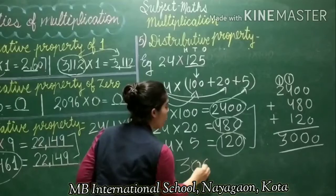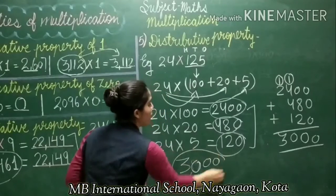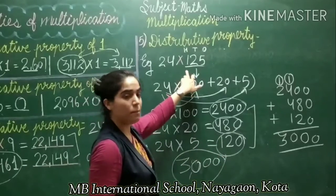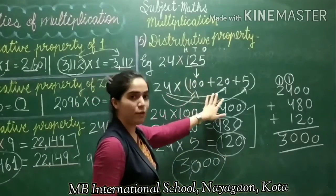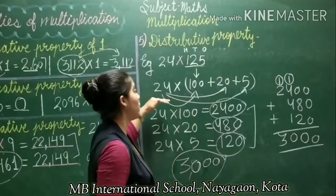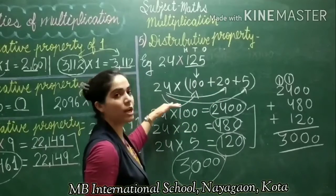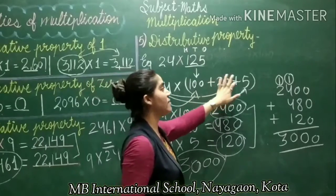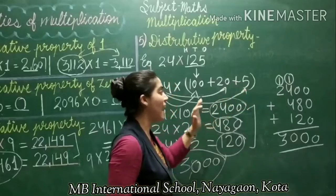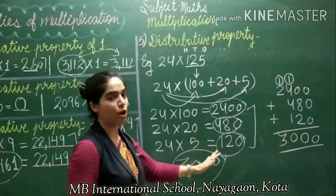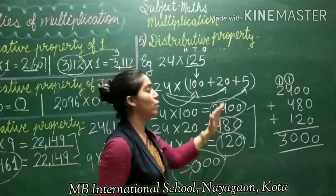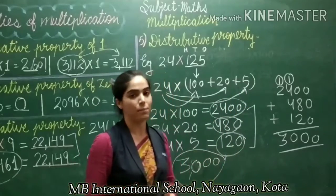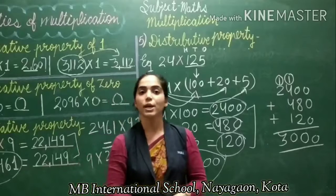According to distributive property, first we have to write the bigger number in expanded form. Then we multiply the smaller number by each part of the expanded form — by 100, then by 20, then by 1 — and after getting the products, we add all the products to get the final product. Thank you.